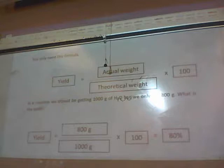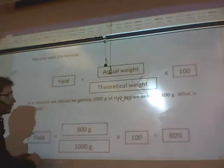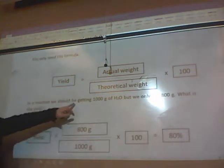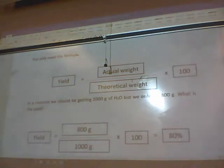If you should be getting a thousand grams of water but you really get 800, the yield would be 80% because you get 80% of the thing you should be getting. It's okay.